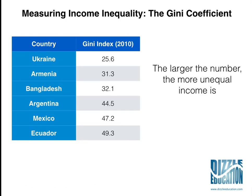We've got some examples of Gini coefficient data for different countries around the world. The larger the number, the more unequal the income distribution in that country. For example, Ukraine at 25.6 is the most equal of these six countries, and Ecuador at 49.3 is the most unequal. The Gini index is sometimes represented as a number between 0 and 100, or alternatively as a number between 0 and 1 — it means the same thing. Ukraine's 25.6 might alternatively be shown as 0.256; different organisations present the data in slightly different ways.